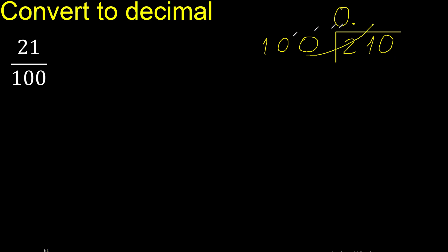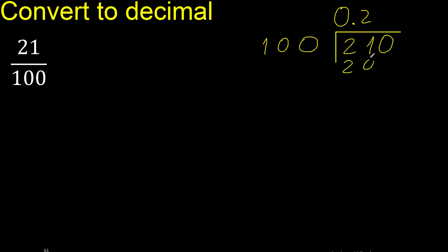Therefore, 100 multiply by which number is nearest to 210 but not greater — multiply by 3, 300 is greater. Therefore multiply by 2 is 200. Subtract is 10.